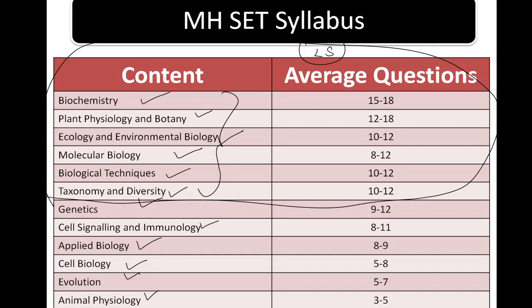Biochemistry has almost 15 to 18 questions. If we talk about plant physiology, then there are 12 to 18 questions, approximately, if you consider the previous years.